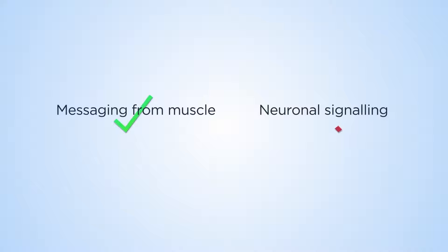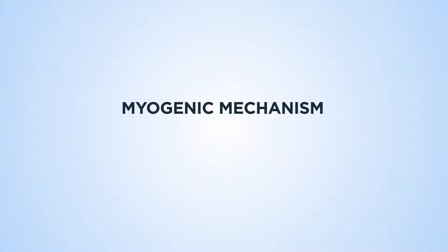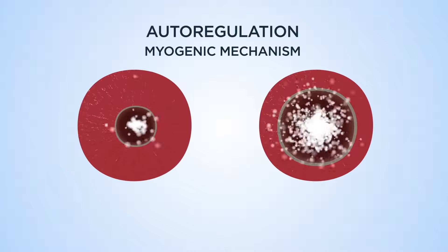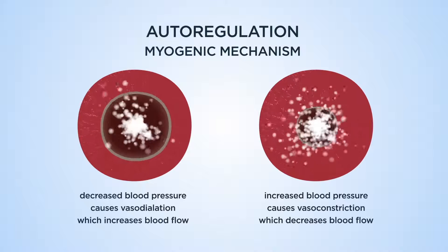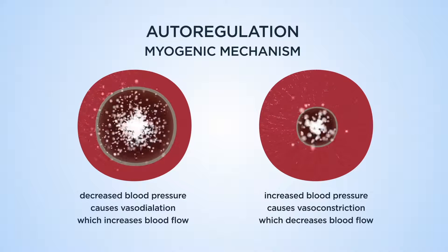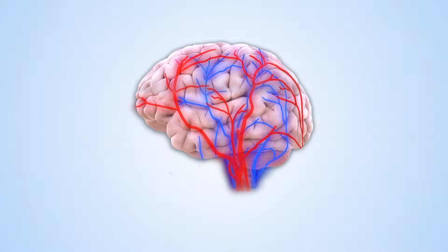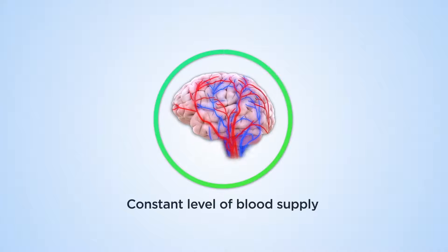Cerebral blood flow autoregulation stems mainly from messaging from muscle, rather than neuronal signaling, a process referred to as myogenic. If arterial blood pressure is high, constrictions in the arterial muscle cells control the amount of blood flowing through vessels. This ensures that the brain, which is very sensitive to physiological changes, is supplied with a constant level of blood.